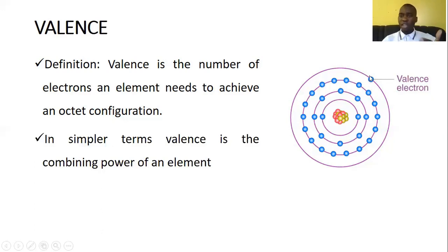So now we are saying here an element can achieve this octet configuration by either losing or gaining that particular electron, depending on whichever one is easier. So if the number of electrons is less than four, then it is easier to lose them. But if it is above four, then it is not easier to lose them, but it is easier to add some more. Anyway, other details about that will be shared in some other videos. Just make sure you follow through.